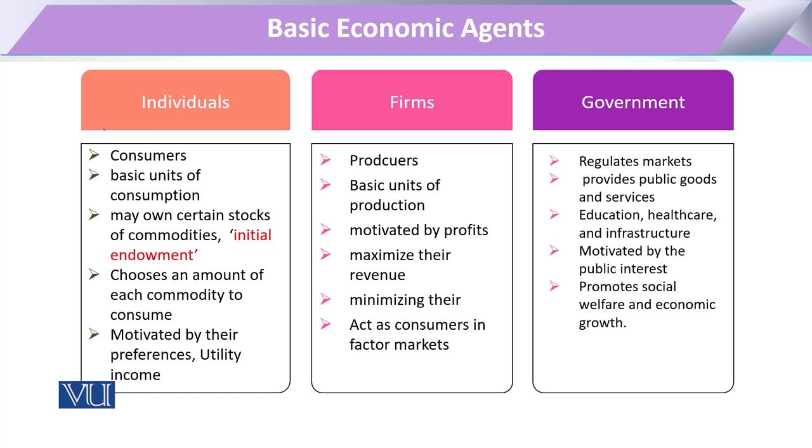That endowment can be in the form of initial stock or the initial endowment. Previously, these initial endowments were in the form of land, or gold, or certain coins that those consumers may have for the purchase of food, cloth, shelter, or any type of luxury nowadays.